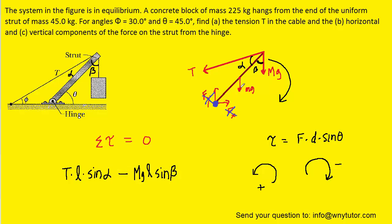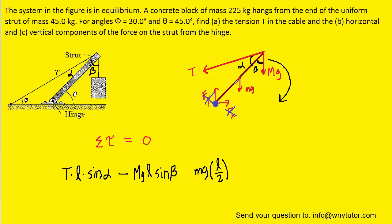Finally, we move to the force labeled lowercase mg. The distance to the pivot is only half the length, so we have l divided by 2. From a bit of geometry, the angle between mg and the strut is the same angle beta, so we include sine of beta. This force tends to cause the strut to rotate clockwise, giving it a negative torque value. Remember, fx and fy produce no torque because they pass through the pivot point.